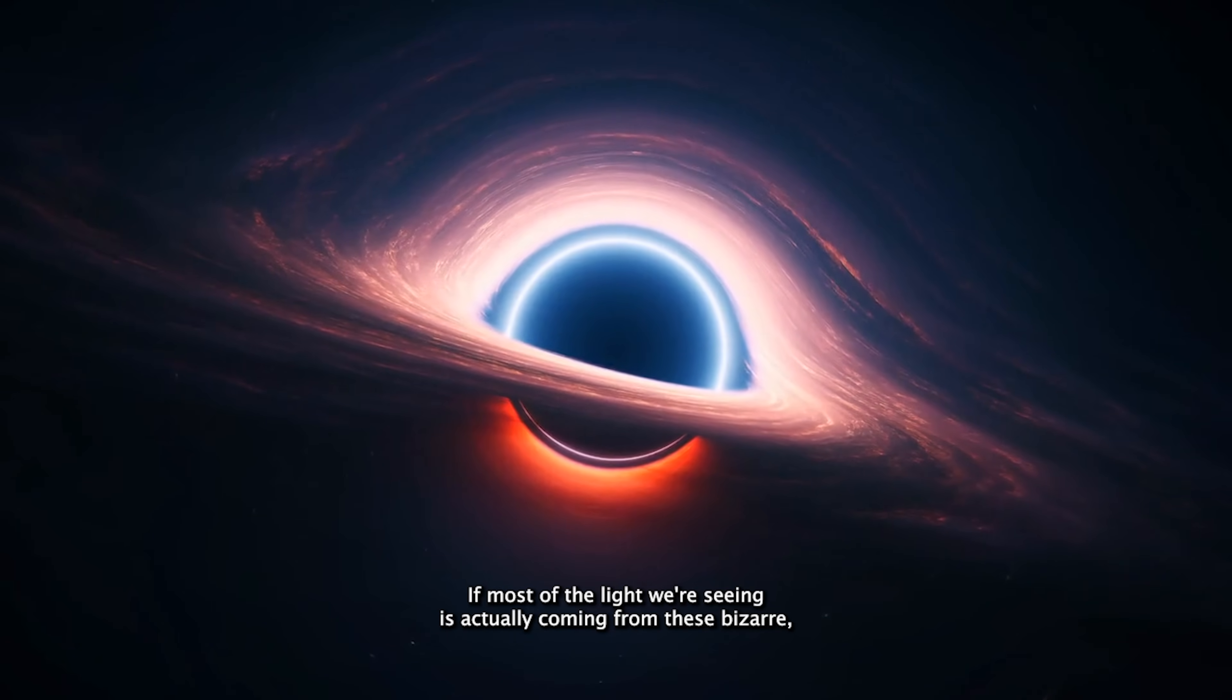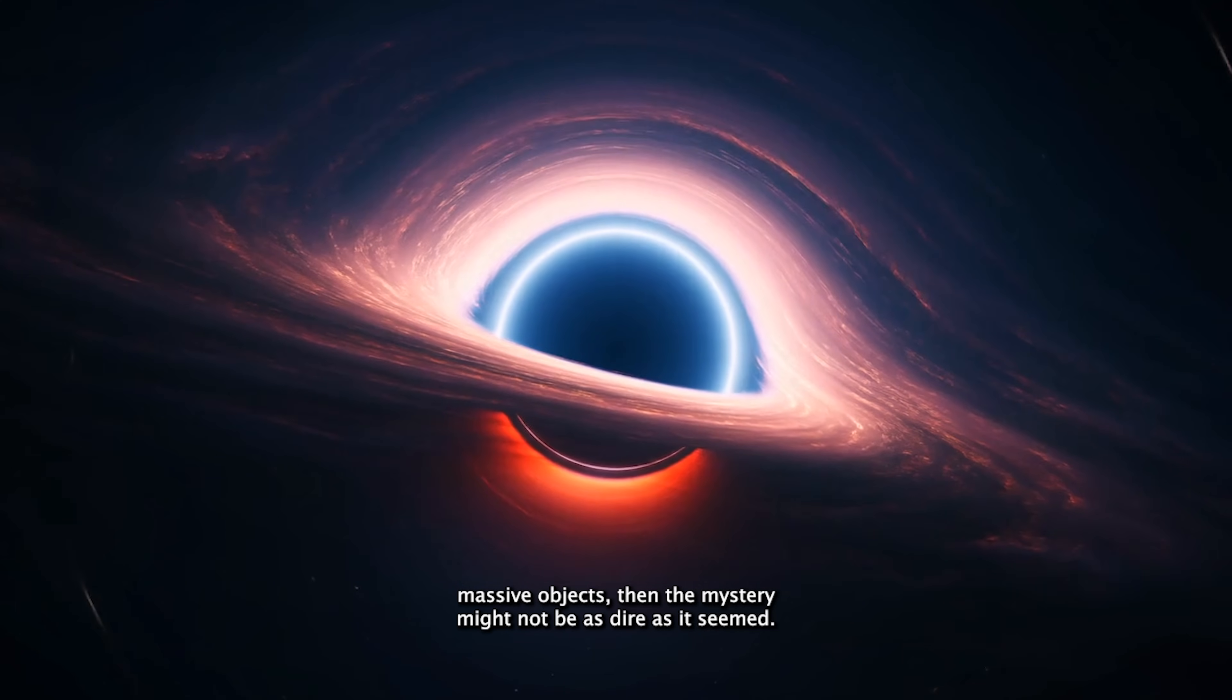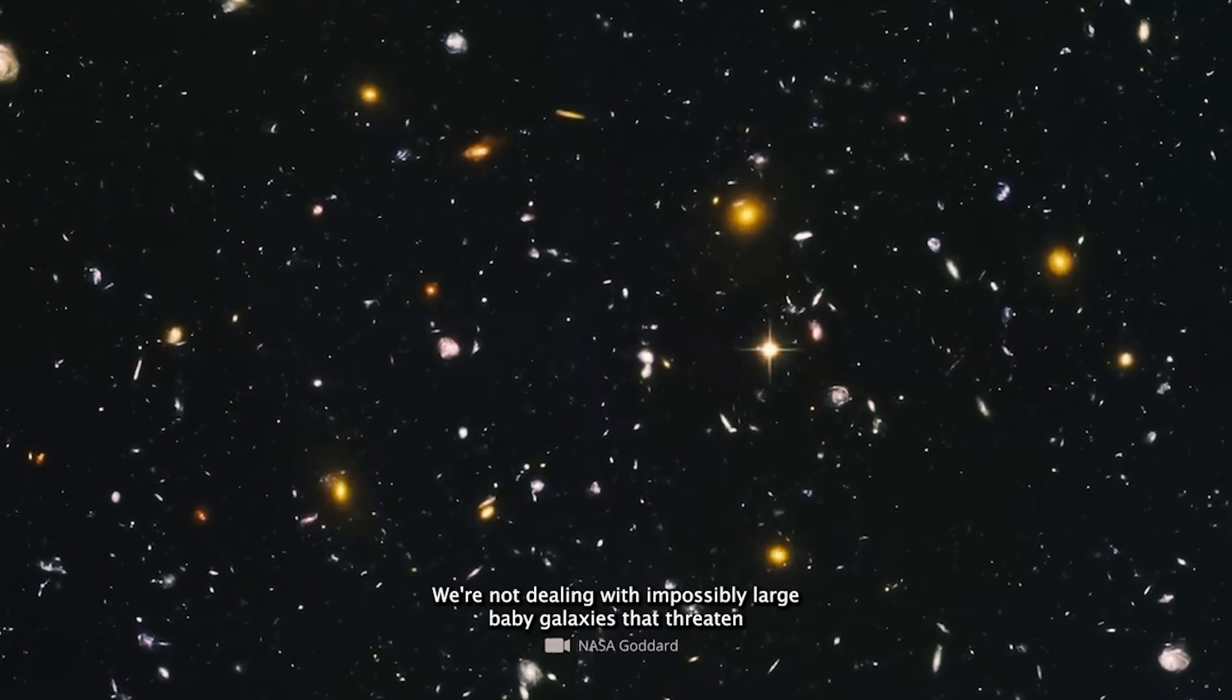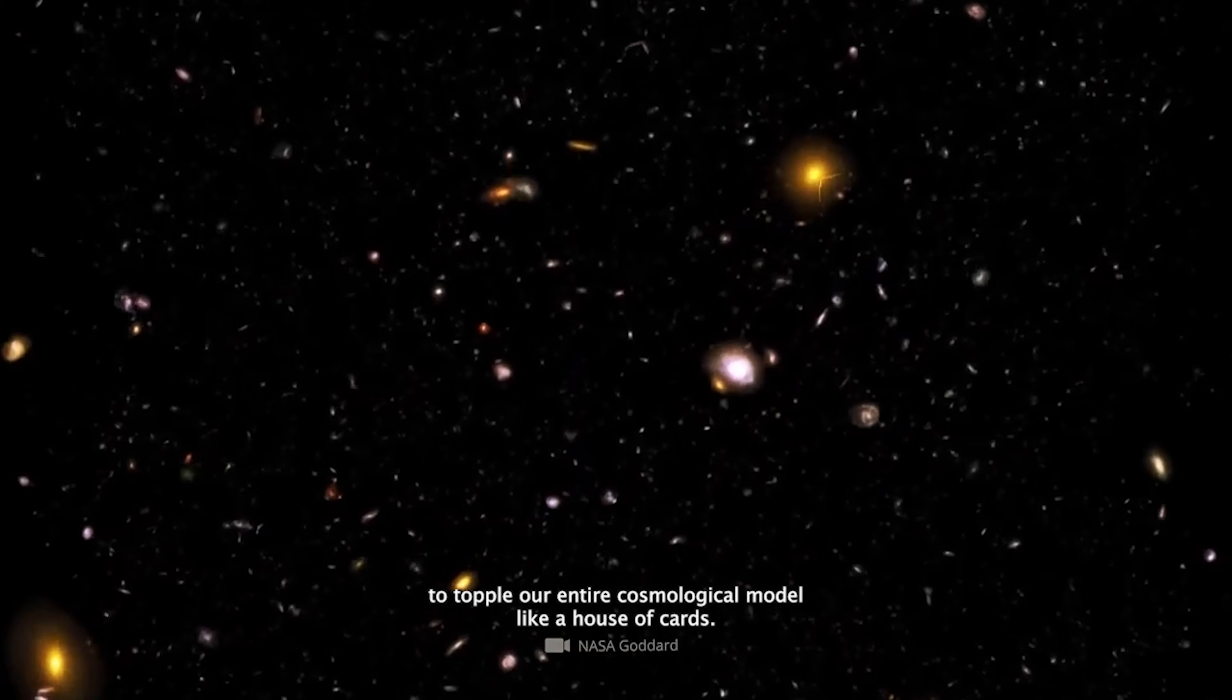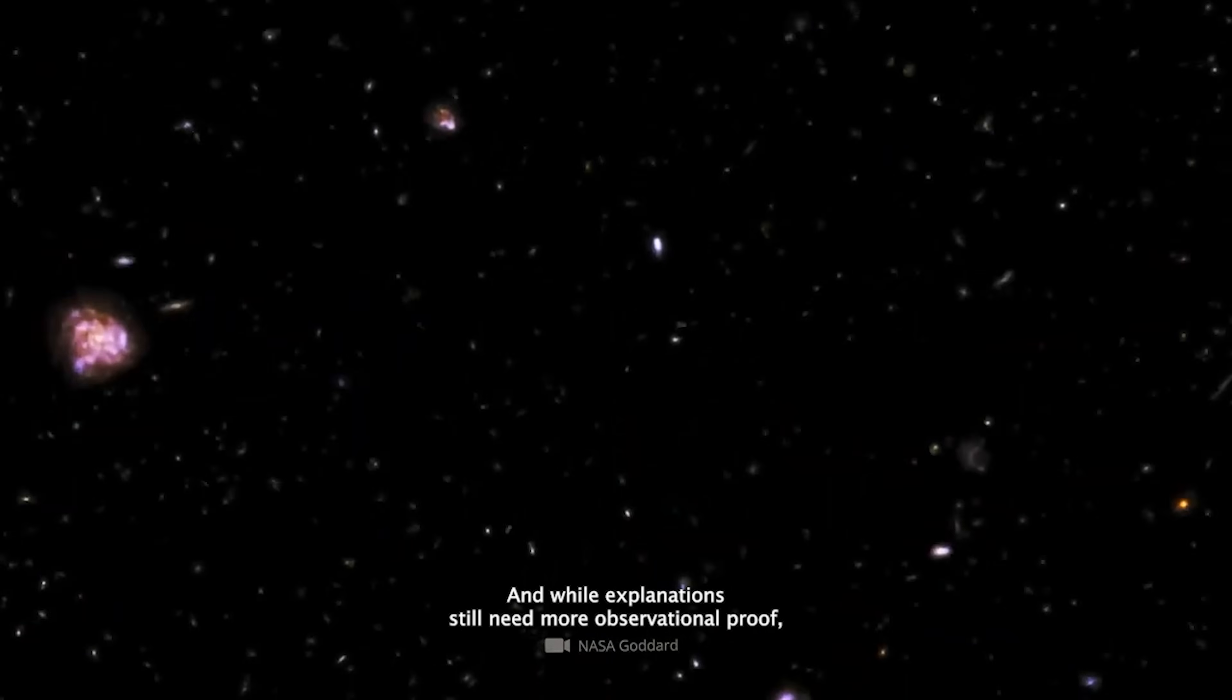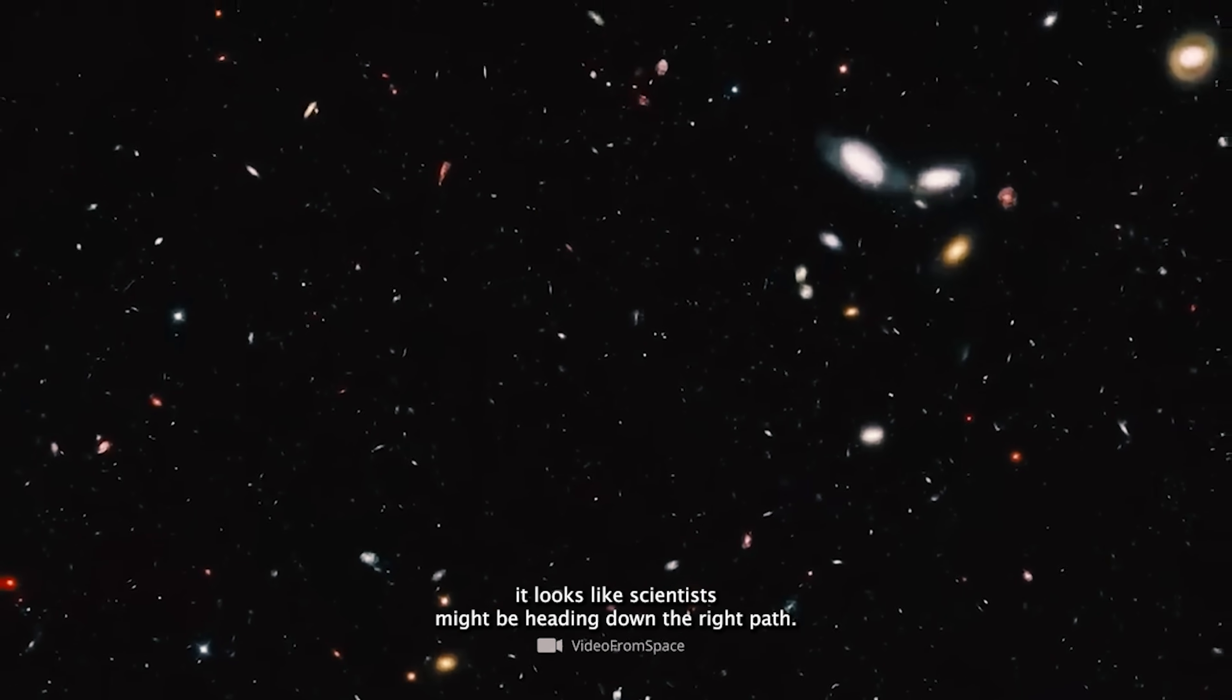They could actually be young, rapidly growing black holes in disguise. If most of the light we're seeing is actually coming from these bizarre, massive objects, then the mystery might not be as dire as it seemed. We're not dealing with impossibly large baby galaxies that threaten to topple our entire cosmological model like a house of cards. And while this explanation still needs more observational proof, it looks like scientists might be heading down the right path.